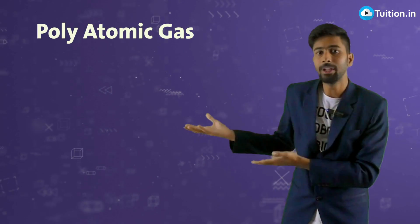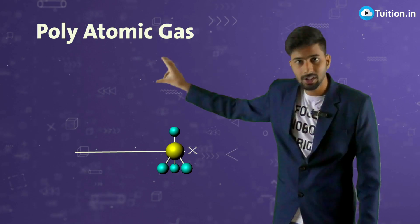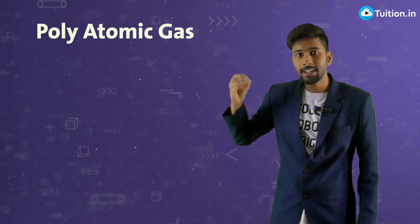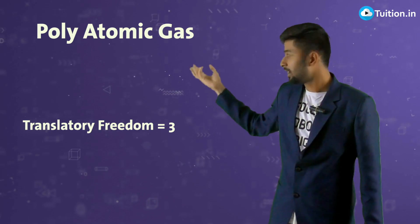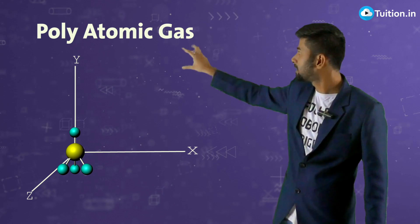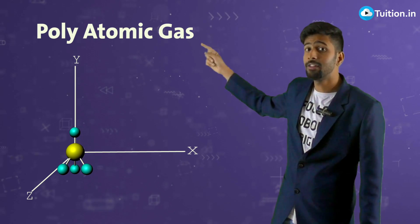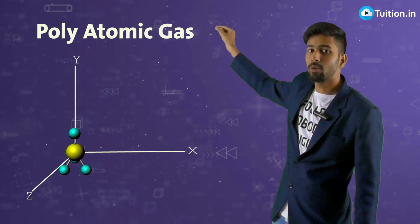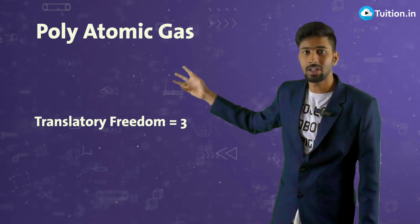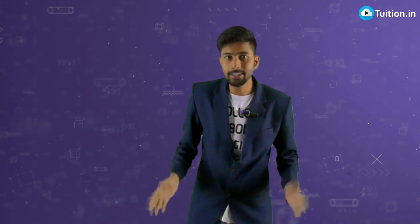For a polyatomic gas, consider three atoms arranged like a triangle. This combination can move in the x direction, y direction, or z direction, giving three translational degrees of freedom — no fourth dimension is possible. As for rotation, if two of the atoms are placed on the x axis, it can rotate about the y axis, the z axis, and also has significant rotation about the x axis because the third atom has a non-zero moment of inertia about x. So there are three rotational degrees of freedom as well. That is why at moderate temperatures a polyatomic gas has six degrees of freedom. That is how you analyze and visualize the degrees of freedom of a gas.